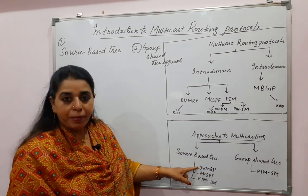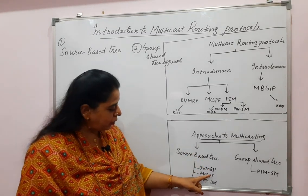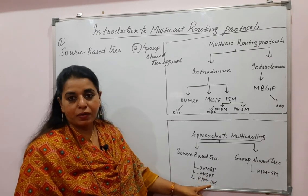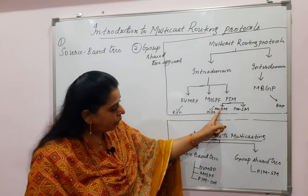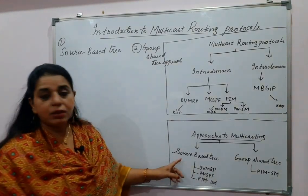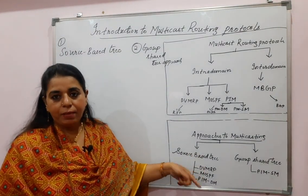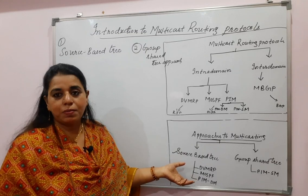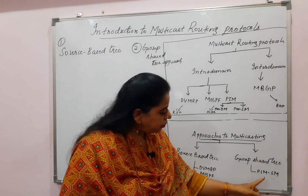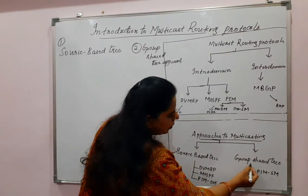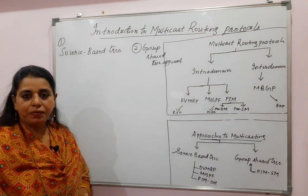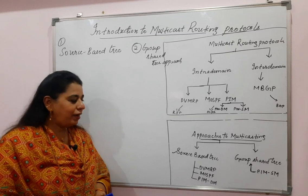DVMRP, MOSPF, and PIM-DM — not PIM-SM, only PIM-DM — these three protocols use the source-based tree approach to multicasting. Whereas the other protocol, PIM-SM, uses the group shared tree approach. I will explain what each approach means with an example.